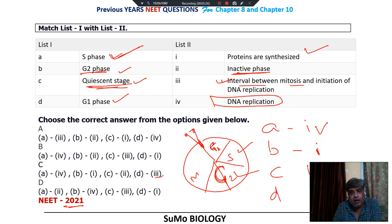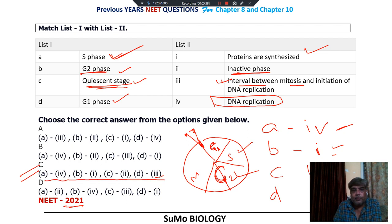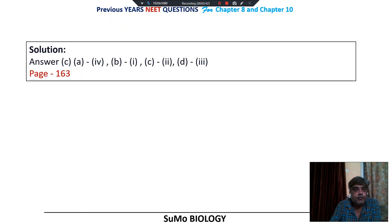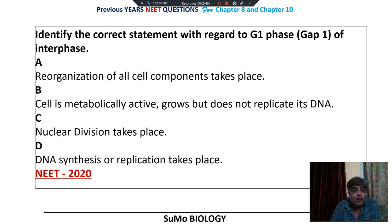So D, G1 phase, goes with 3. The correct sequence is 4, 1, 2, 3 — option number C. This is mentioned on page number 163. Now we enter the NEET 2020 question paper: identify the correct statement with regard to G1 phase of interphase.